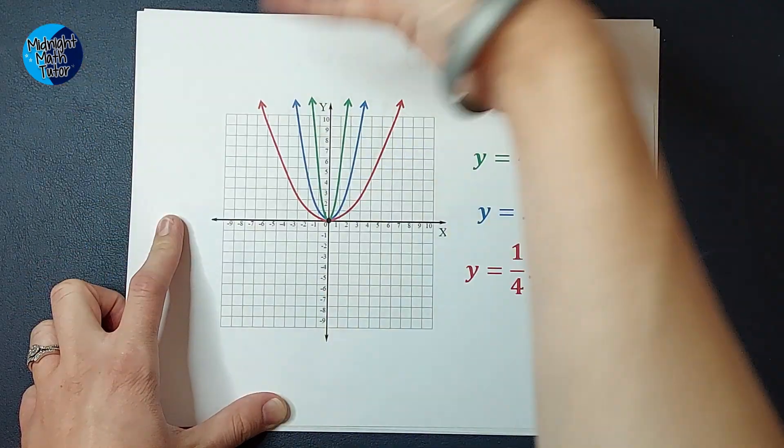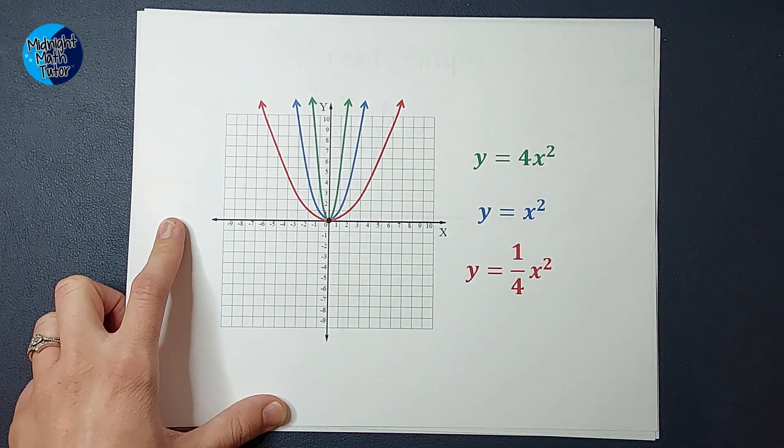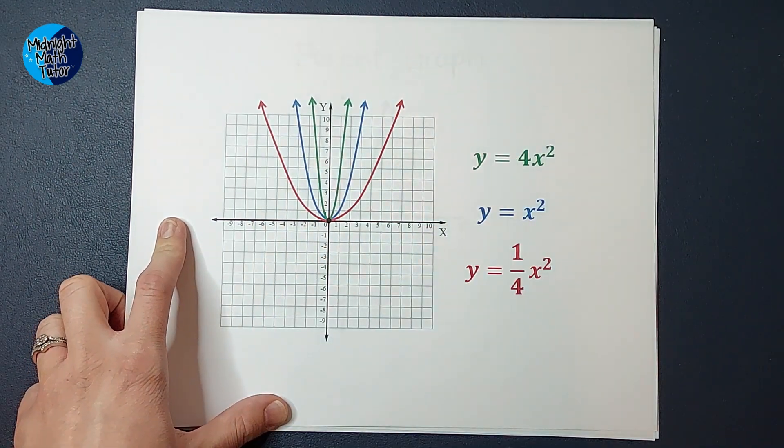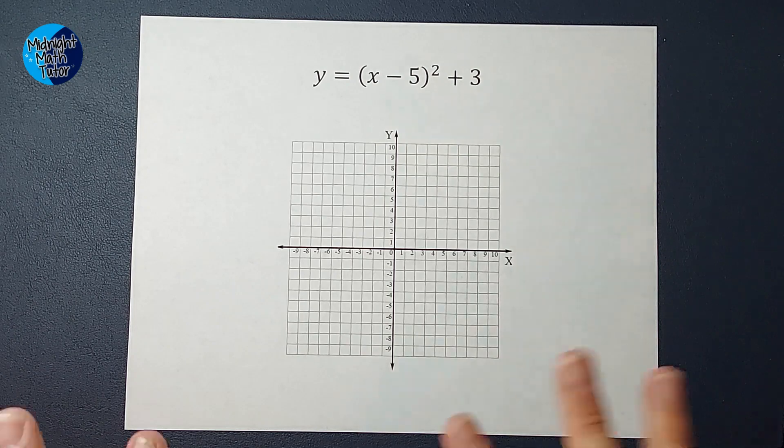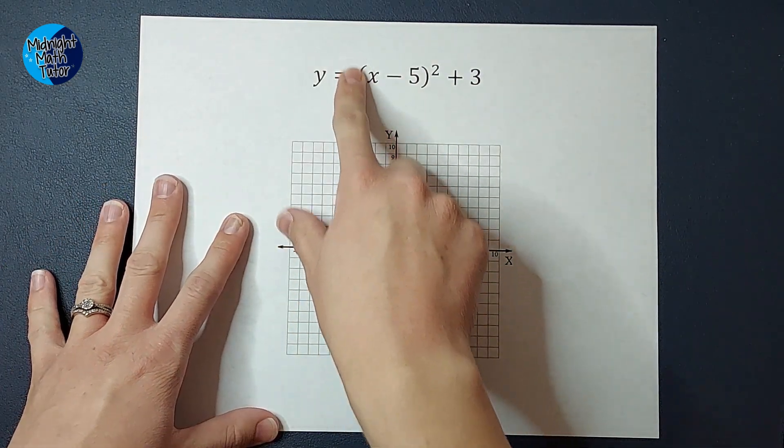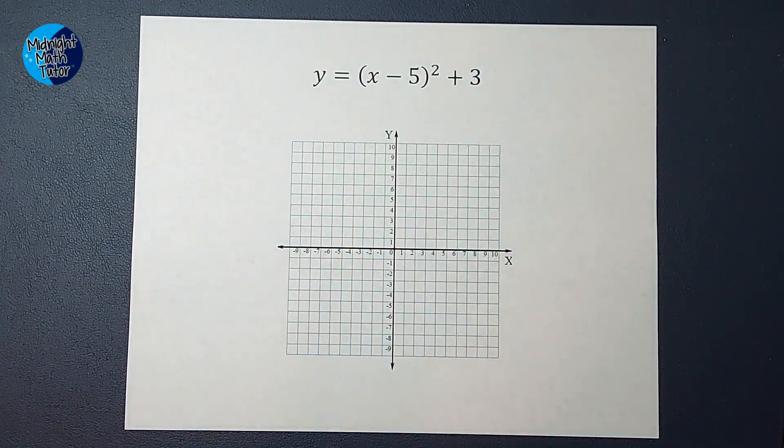It's a lot more flat, right? I don't know the best words to describe that, but I'm hoping you can see that. So like I said, that doesn't apply to this one because there's not, well, it's a 1, right? There's a 1 right there. So it's the same as our parent graph.